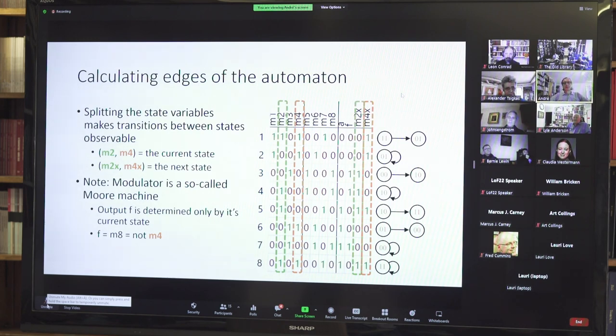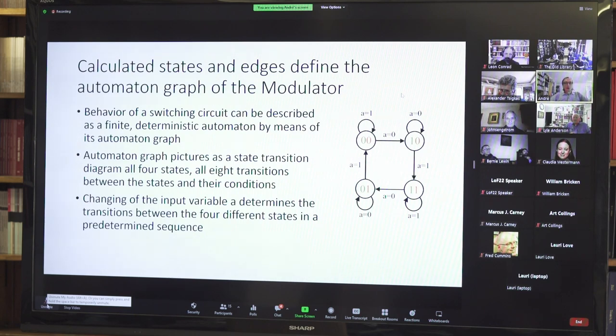The next step is very important. We not only calculate the states, but we calculate the connections between the states. How does the automaton get from one state to another? This is done by splitting up the state variables, which makes the transitions between states observable. M2 and M4 notifies the current state, and M2X and M4X the next state. I'll skip the part with the Moore machine. Those calculated edges and states together define the automaton graph of the modulator.